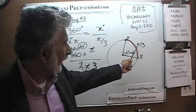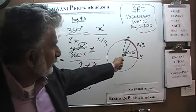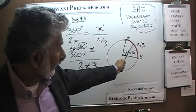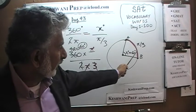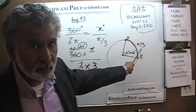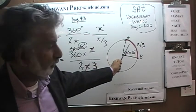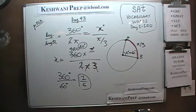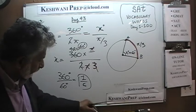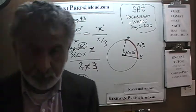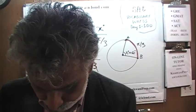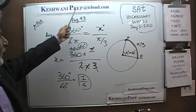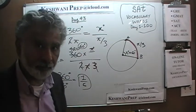I don't know why I made it so complicated. The arc is pi over 3. If the circumference were pi, this would be 1 third of it. But the circumference is 2 pi, so this arc is 1 sixth. That was the end of the show. I'll see you tomorrow, where we'll begin the next section, section number 4. In the meantime, if you wish to get hold of me, you can reach me at keshwaniprep at icloud.com. Just send me an email.